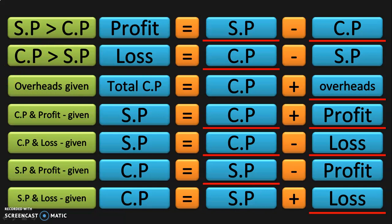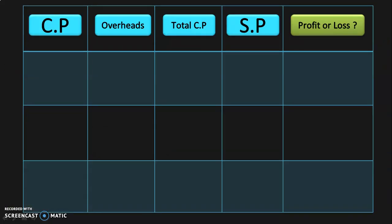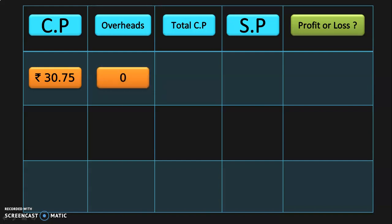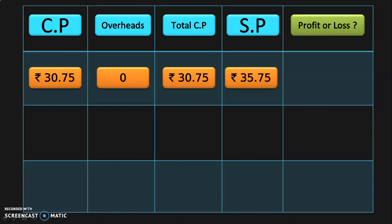Let us do some more examples. I am going to give you a table with the cost price and overheads, and you will find the total cost price. The selling price will also be given and you will decide if the transaction is a profit or a loss. Cost price is Rs. 30.75 paise, overhead cost is 0, so total cost price is Rs. 30.75. Selling price is Rs. 35.75 paise. Is this a profit or loss?